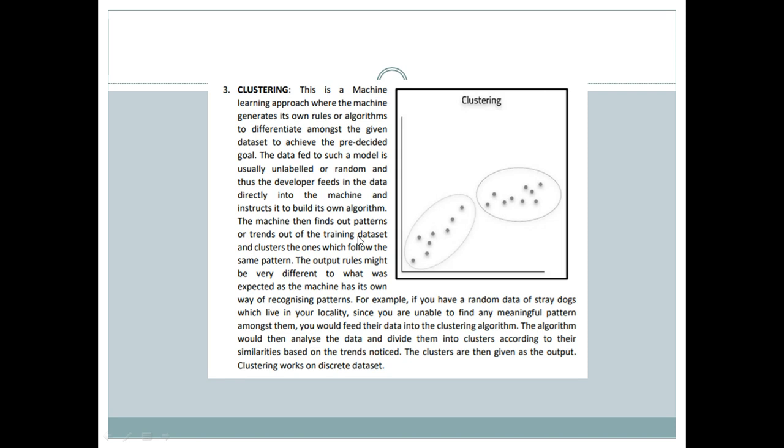Then there is clustering. Under clustering, we are not aware of the rules and we are not aware of what clustering is there. For example, if we have random data of stray dogs which live in the locality and we are unable to find any meaningful pattern among them, we would feed in the data.